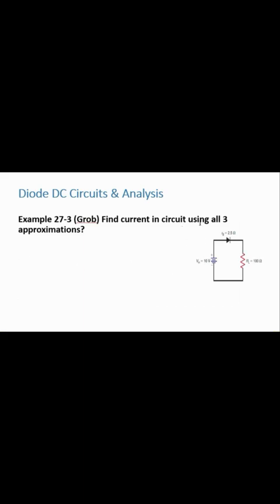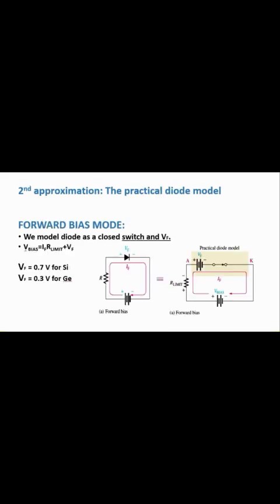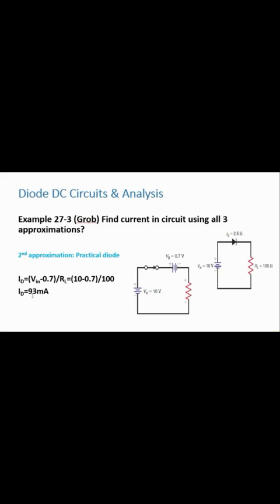Now an example using the practical diode model on the same circuit. Since the diode is forward biased, we replace it with a closed switch and Vb (barrier potential). Using the equation V_bias = I_d × R_L + Vf, we can find I_d. The result from this approximation is more accurate than from the ideal model.